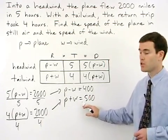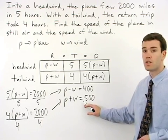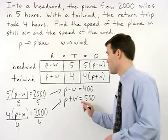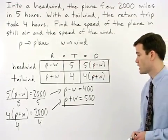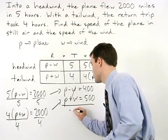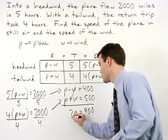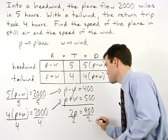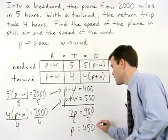Now our system of equations is set up in a familiar way and we can use addition to solve it. Notice that when we add the two equations together, the w's cancel and we have 2p = 900. Divide both sides by 2 and p = 450.